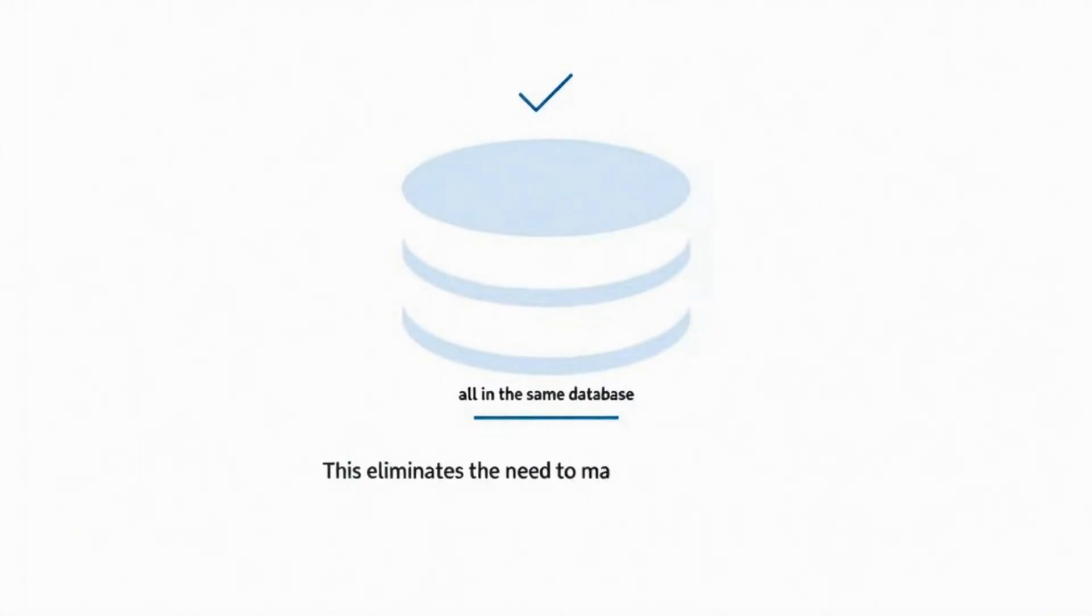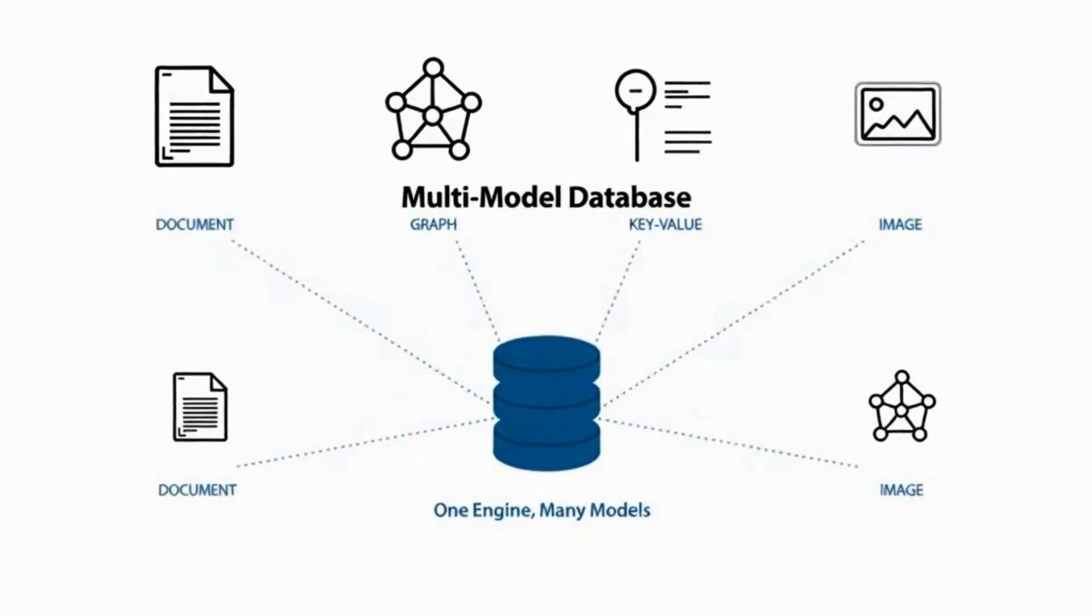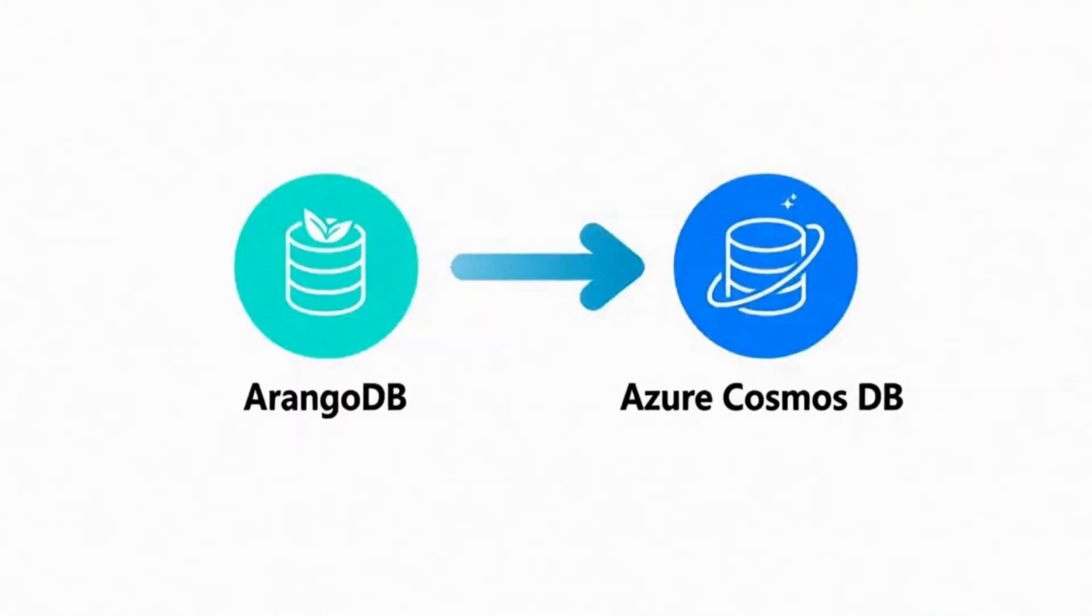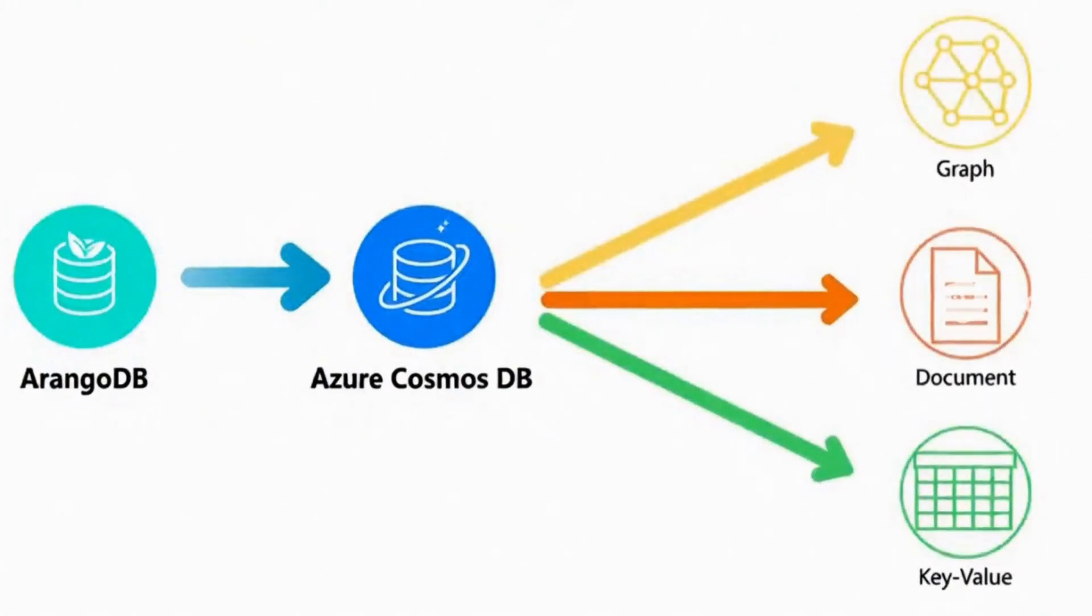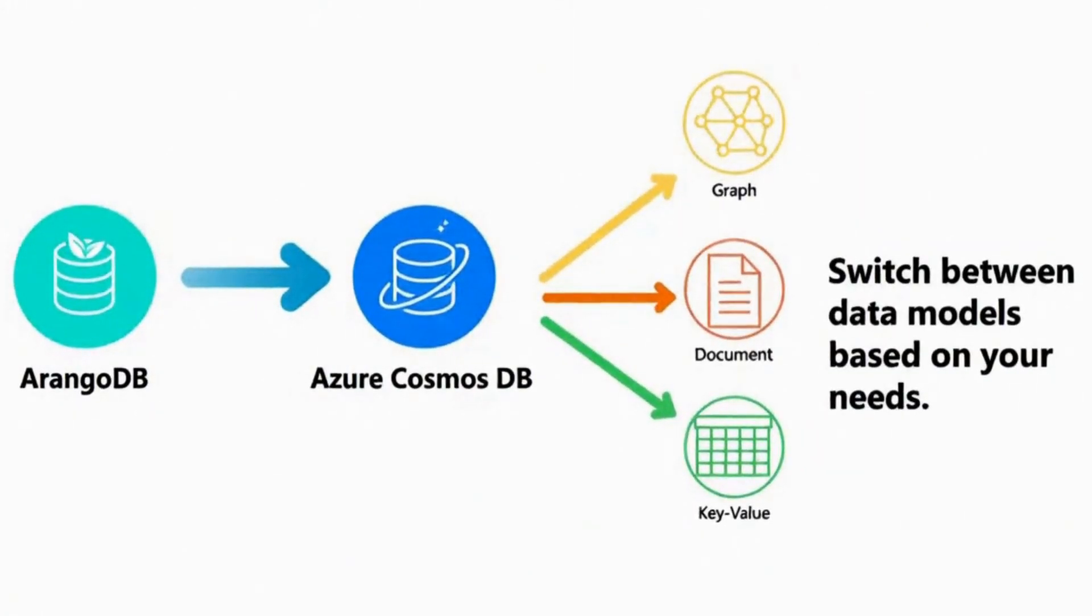This eliminates the need to manage multiple different database systems. They're great for companies that deal with diverse types of data and want to simplify their technology stack. ArangoDB and Azure Cosmos DB are examples that let you switch between different data models depending on your needs.